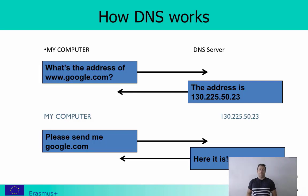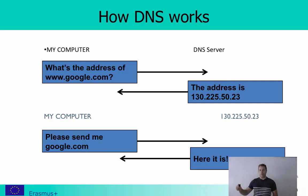DNS works as follows: when you type google.com, your computer sends a request to a DNS server asking for the IP address of google.com. You get a reply back with an IP address — in this example 130.225.50.23. Based on that reply you send an HTTP request to that IP address and receive the web page you want. DNS is quite crucial to how the internet works, not only for web browsing but for all activities using domain names, which are human-readable names that are easy to remember.